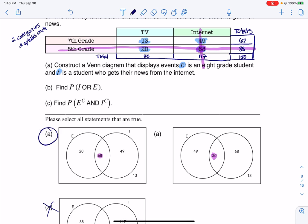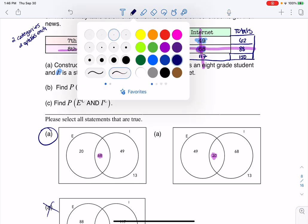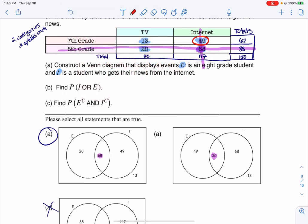But let's just play the rest of this out just so we can have some practice with it. So if you look at what's going on here, let me go ahead and get a different color. These 49 folks, they're in the internet column. They're just not in 8th grade. They're 7th graders.